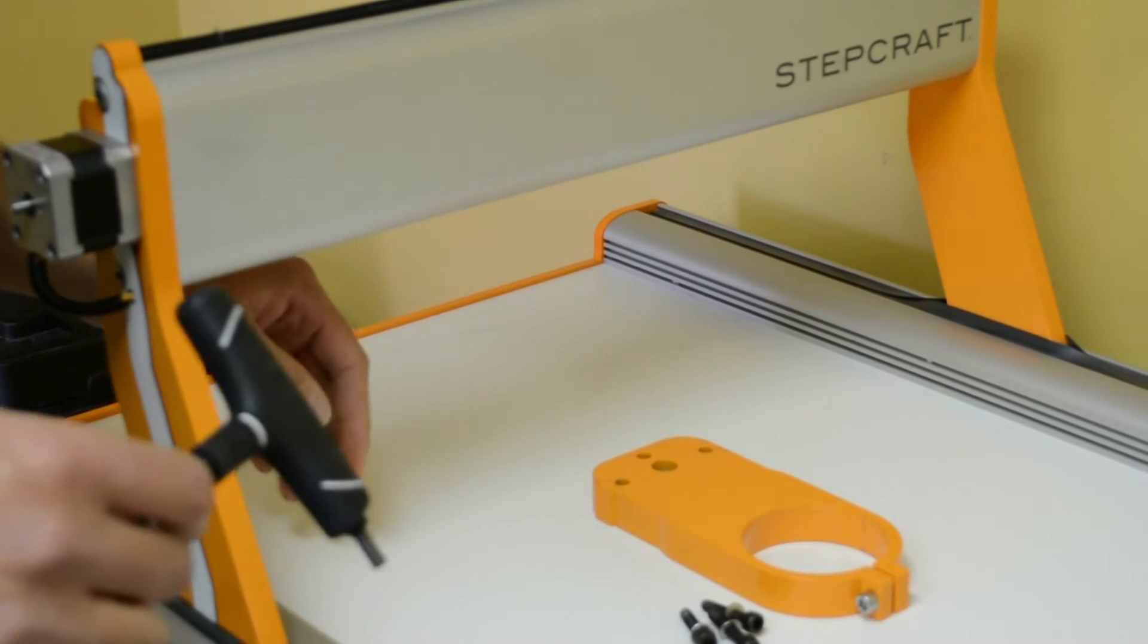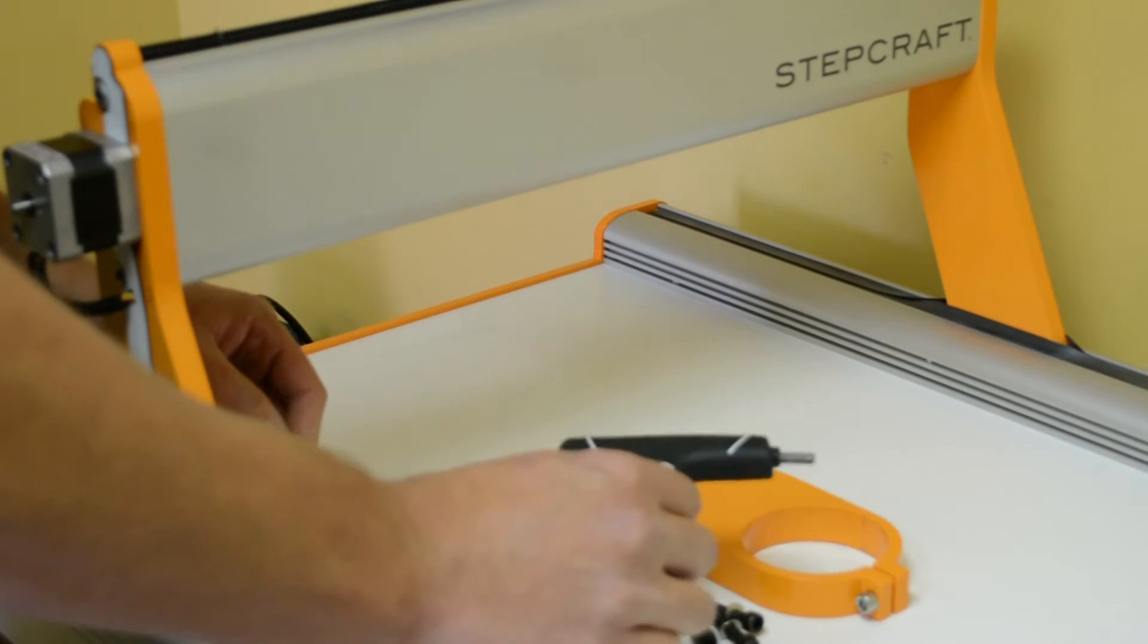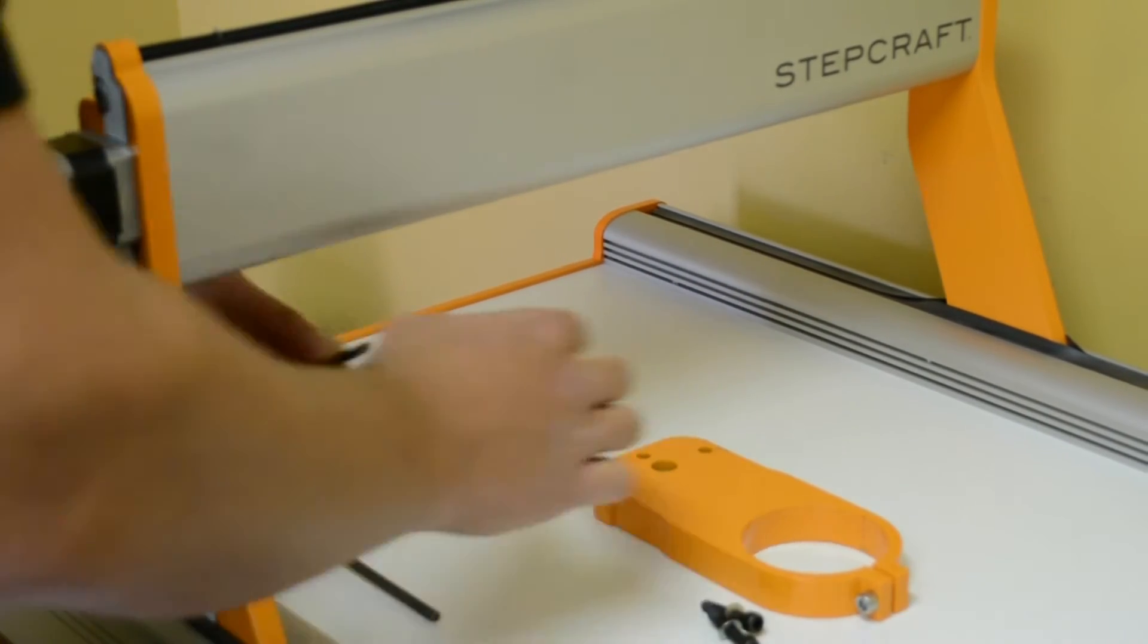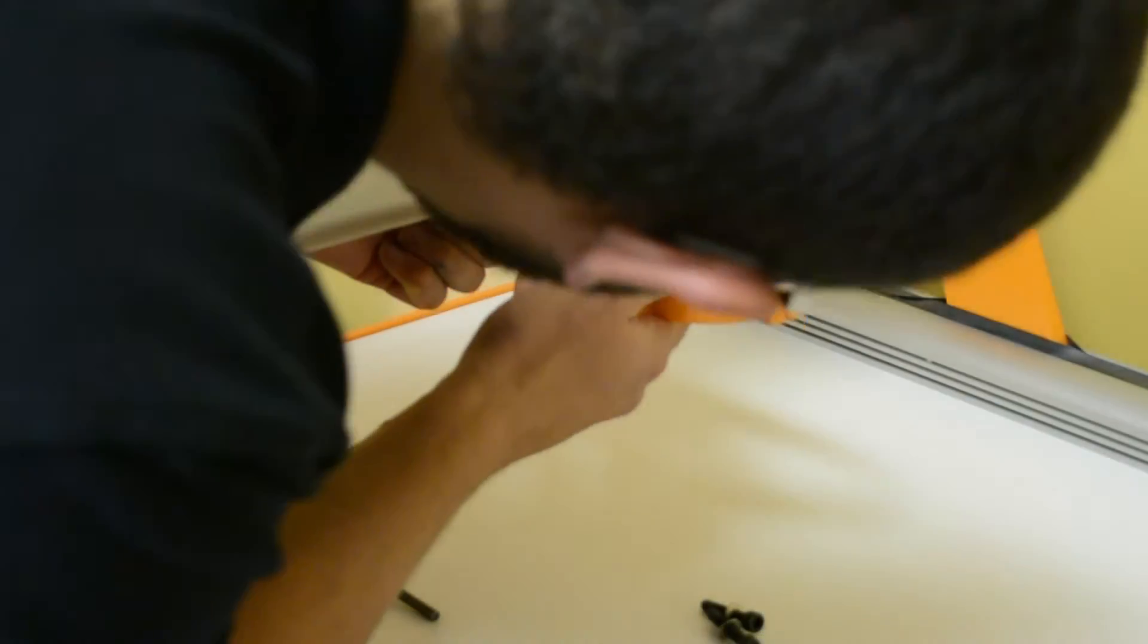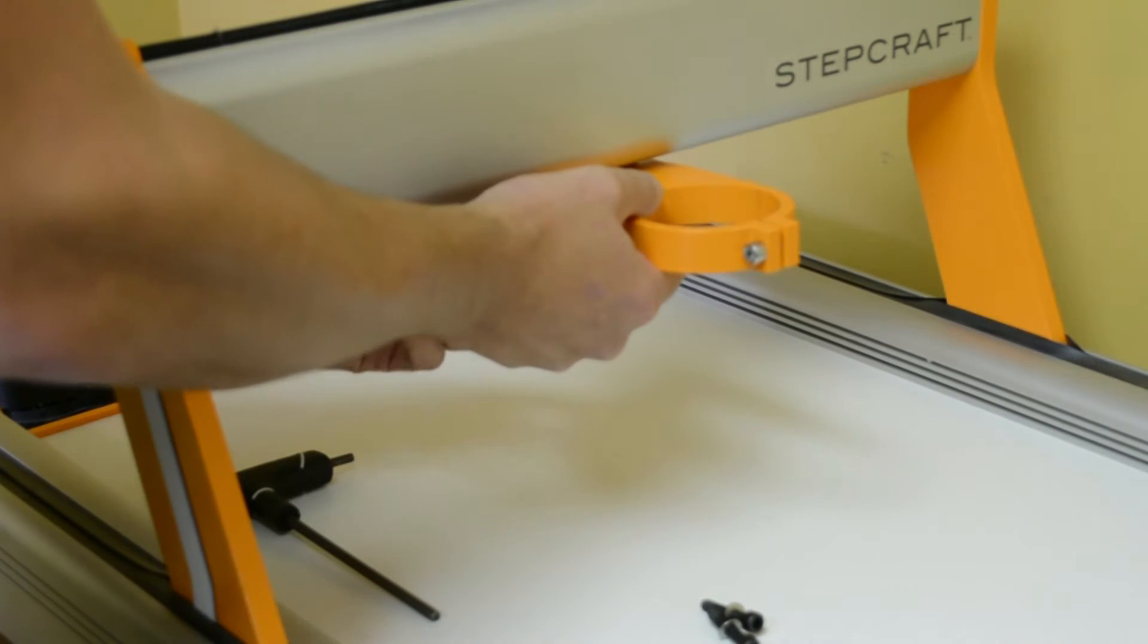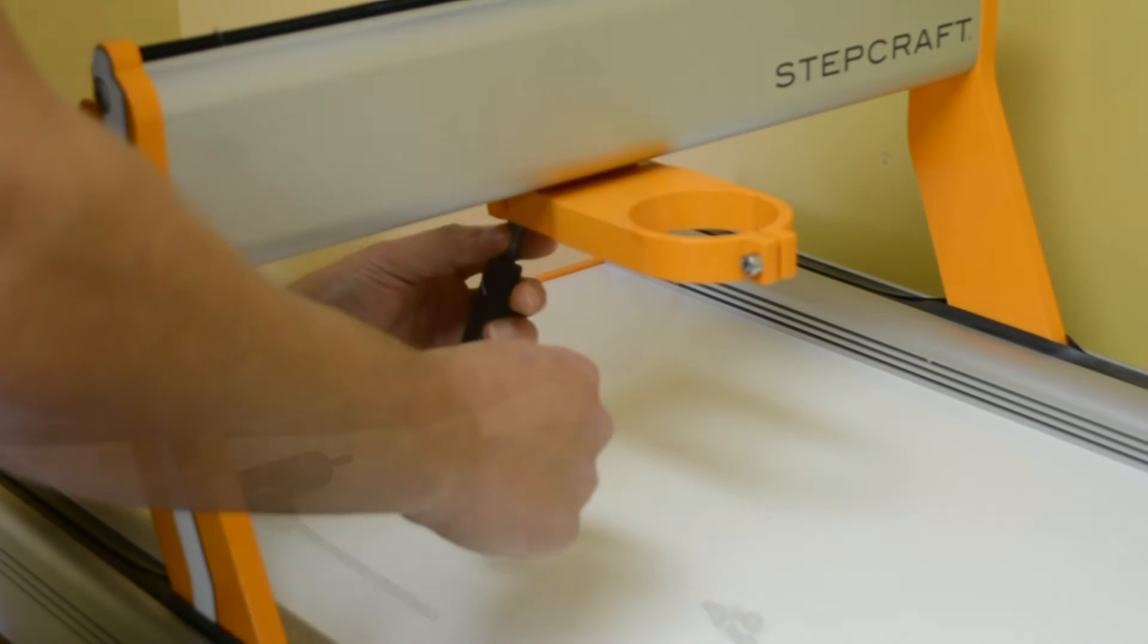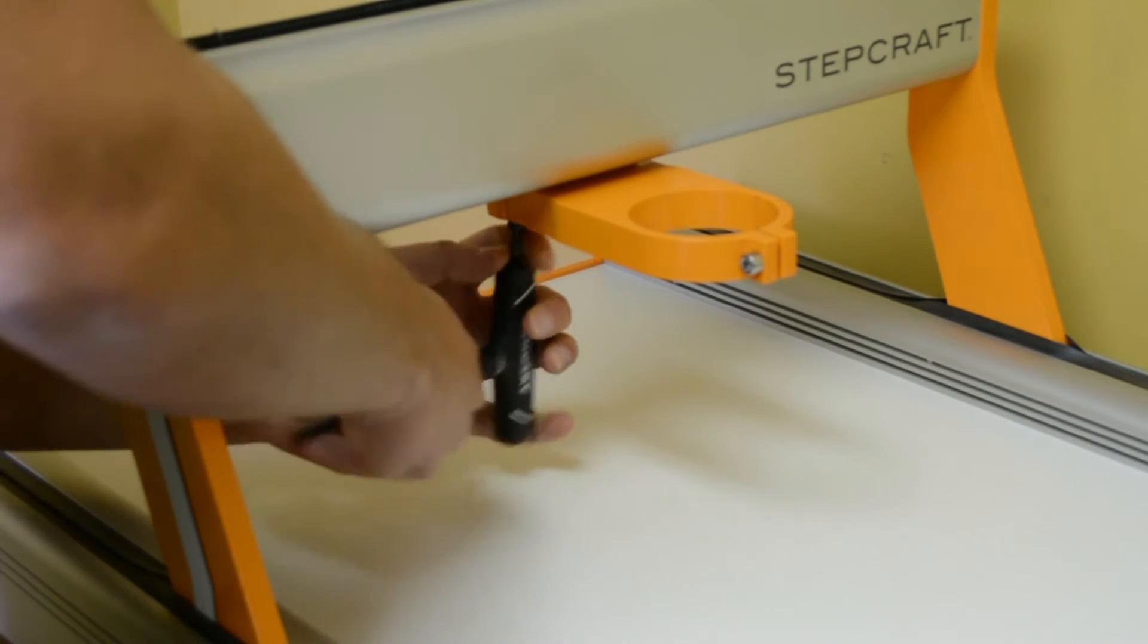Now I have the new bracket. The hardware for this is a five millimeter Allen that you'll need, and I'm going to start installing it. Three Allen screws installed, I'm going to tighten them down.